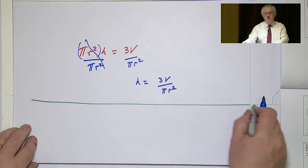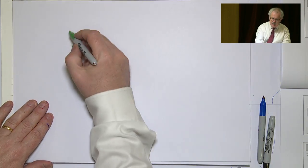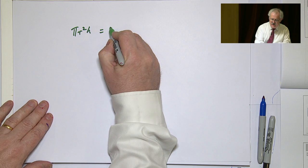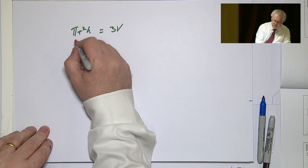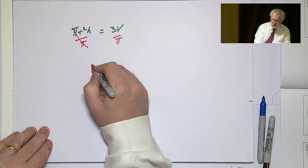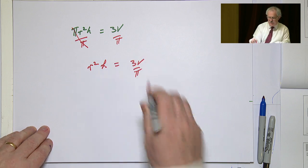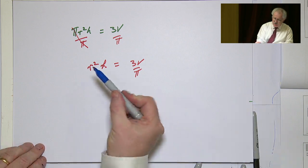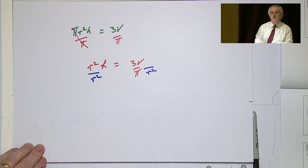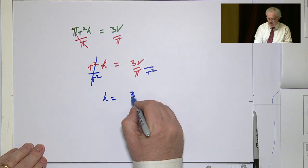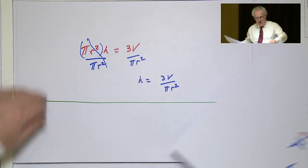Alternatively, we could take it a step at a time — divide by π first, then divide by r². Either way, h = 3V/(πr²). There's no need to rush; you can eliminate factors one at a time and you'll arrive at the same answer.